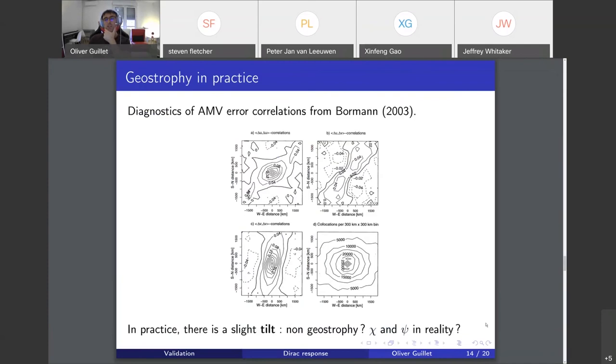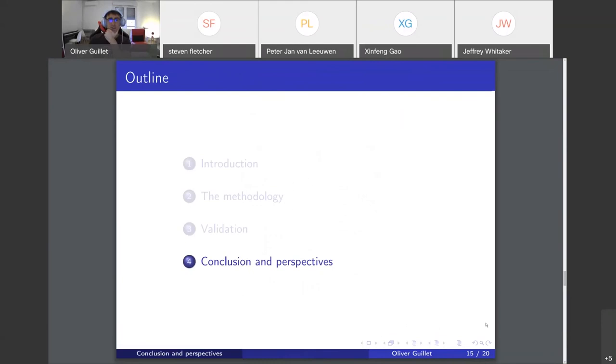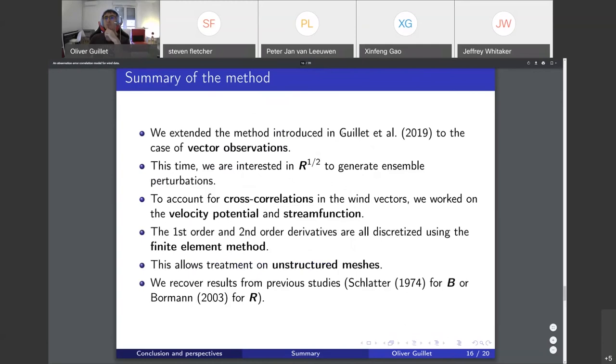Maybe these two functions, two variables, are not exactly uncorrelated in reality, so this is the limit of the model. This was a method using finite elements introduced in 2019 in the paper of Guillet et al, but we extended this work to the case of vector observations, wind data. This time we are not interested in R minus one but square root of R to generate perturbations.